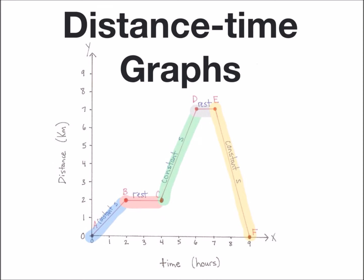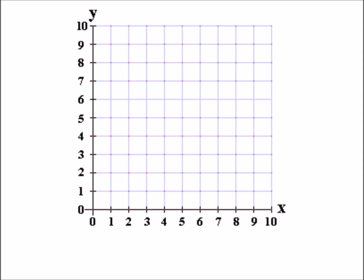This video is going to walk you through the steps to find the speed of an object using a distance-time graph. Here's our graph and what we have on the y-axis is distance in meters and on the x-axis we have time in seconds.